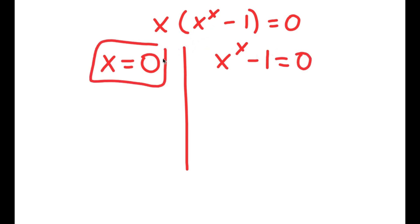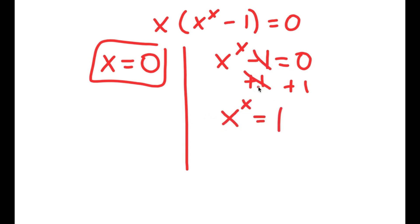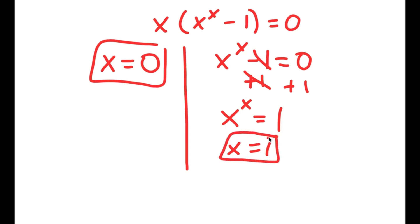So x equals 0 is already a solution. Now for x to the power of x minus 1 equals 0, I'm going to add 1 on both sides, giving me x to the power of x is equal to 1. Because x has to be the same number, we need to find what number to the power of itself equals 1. That's going to be 1, because 1 to the power of 1 equals 1. So x equals 1. And there's no other number that when raised to the power of itself equals 1, meaning x equals 1 is the only solution to this equation.